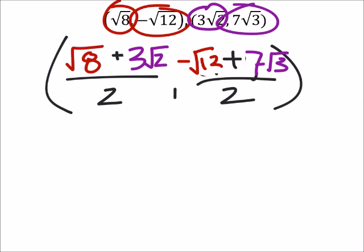Now looking at these, we may think that they can't be combined, but they can if we simplify the square root of 8 and the negative square root of 12. So what does that give us?